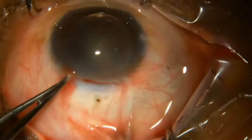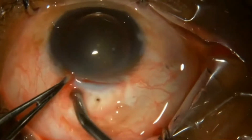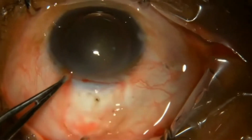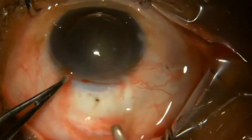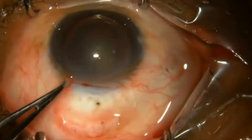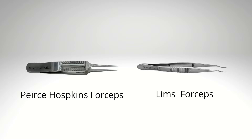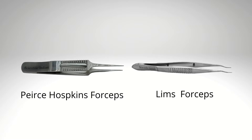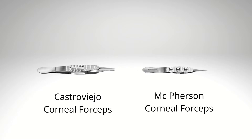Various forceps are used to fix the globe during cataract surgery. These forceps have a tooth tip to hold the fibrous tissue. The tenon or the perilimbal condensed tissue is usually held to fix the globe. The forceps have serrations on the handle for easy gripping. Common types include limbal forceps and Pierce-Hoskins forceps. When corneal sutures are placed, Castroviejo or Barraquer corneal forceps are used.